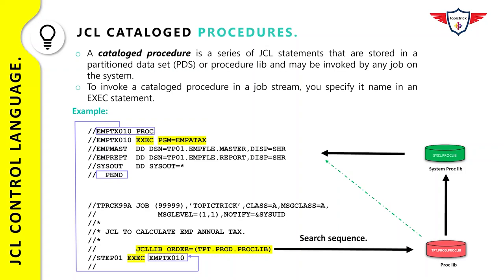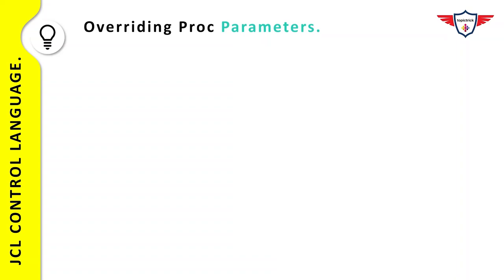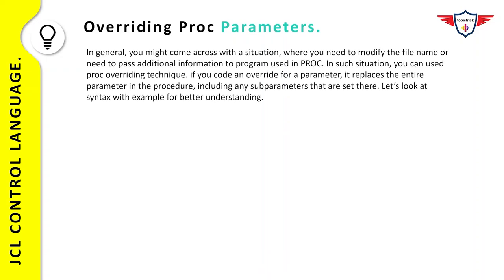Now let's talk about two important topics: how to override different parameters in a PROC, and symbolic parameters. You might encounter a situation where you need to modify a file name or pass additional information to a program used in a PROC. In such situations you have two options: go back and change your PROC or JCL, or use the PROC overriding technique. The PROC overriding technique is the most preferred option and enables you to add, modify, or nullify the values of subparameters used in a PROC without changing the in-stream or catalog procedures.